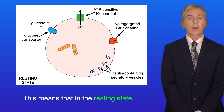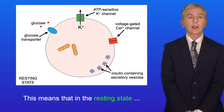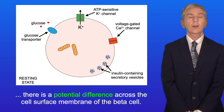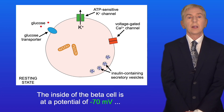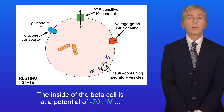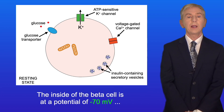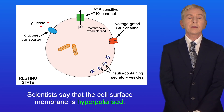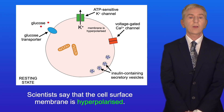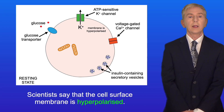This means that in the resting state there's a potential difference across the cell surface membrane of the beta cell. The inside of the beta cell is at a potential of minus 70 millivolts compared to the outside of the cell. Scientists say that the cell surface membrane is hyperpolarized.